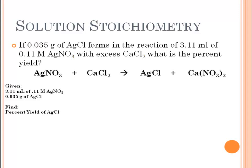Percent yield requires you to find a theoretical yield, and theoretical yields are based on the mathematics of stoichiometry. You take the information you know, calculate how much should be produced, and then use what was actually produced — the 0.035 grams — to figure out the percent yield. But first, is our equation balanced? Looking above, we need to balance it — it is not balanced. So we put a 2 in front of silver nitrate and a 2 in front of silver chloride, making sure we have the same number of each element on both sides.